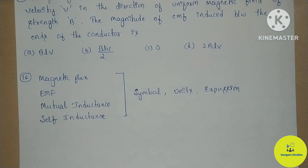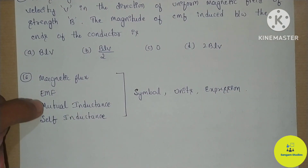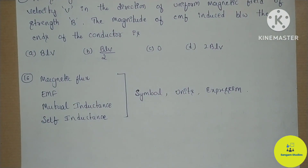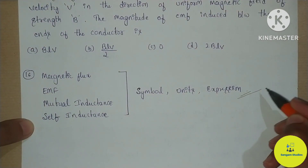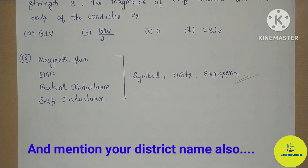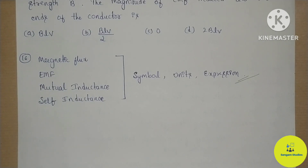For 1-mark MCQs and fill-in-the-blanks, focus on: flux, EMF, mutual inductance, self-inductance — their symbols, units, and expressions from the lesson. Also, there is a timetable in the college for physics, chemistry, and biology. Please comment these 2 important questions for the lesson on electromagnetic induction. Physics chapter 6 is now complete.